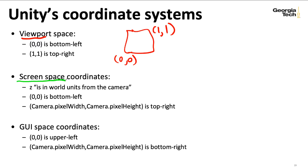there are also screen space coordinates that go from 0, 0 bottom left into something that's more of an integer pixel thing. So we have a pixel width and pixel height.